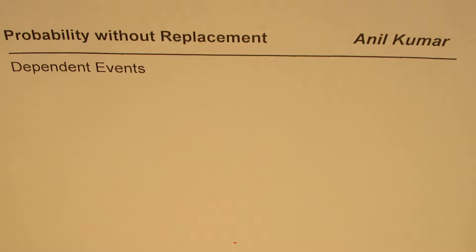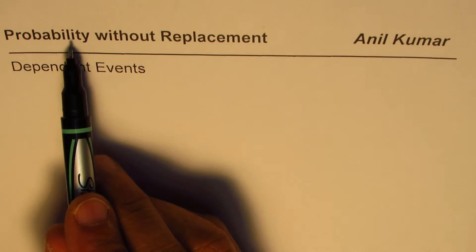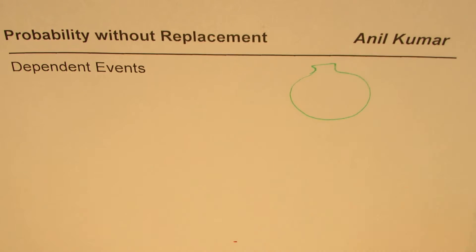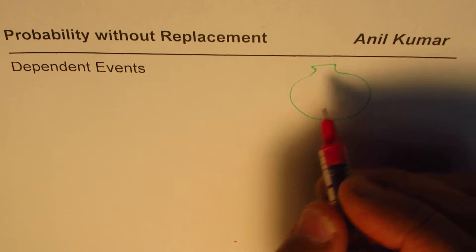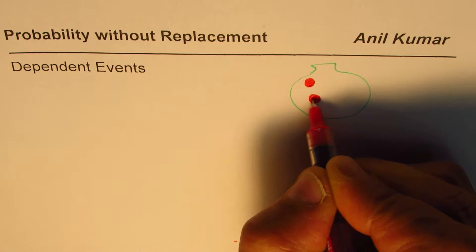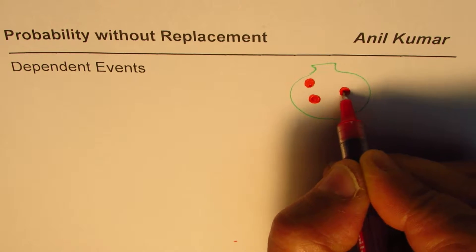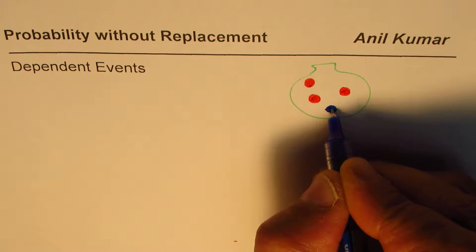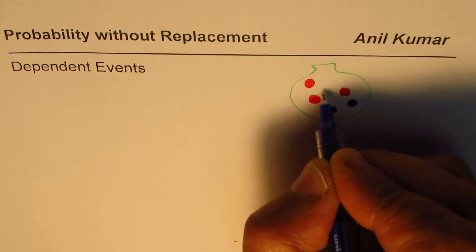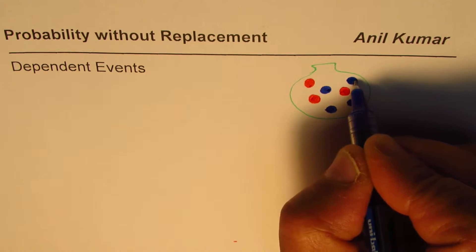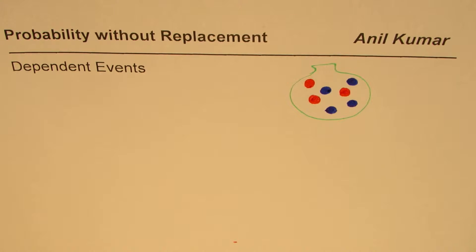I'm Anil Kumar and in this video we will understand the concept of dependent events. We are taking up examples related to probability without replacement. Let's consider a bag with a few colored balls — three red balls and four blue balls, all of the same shape and size.